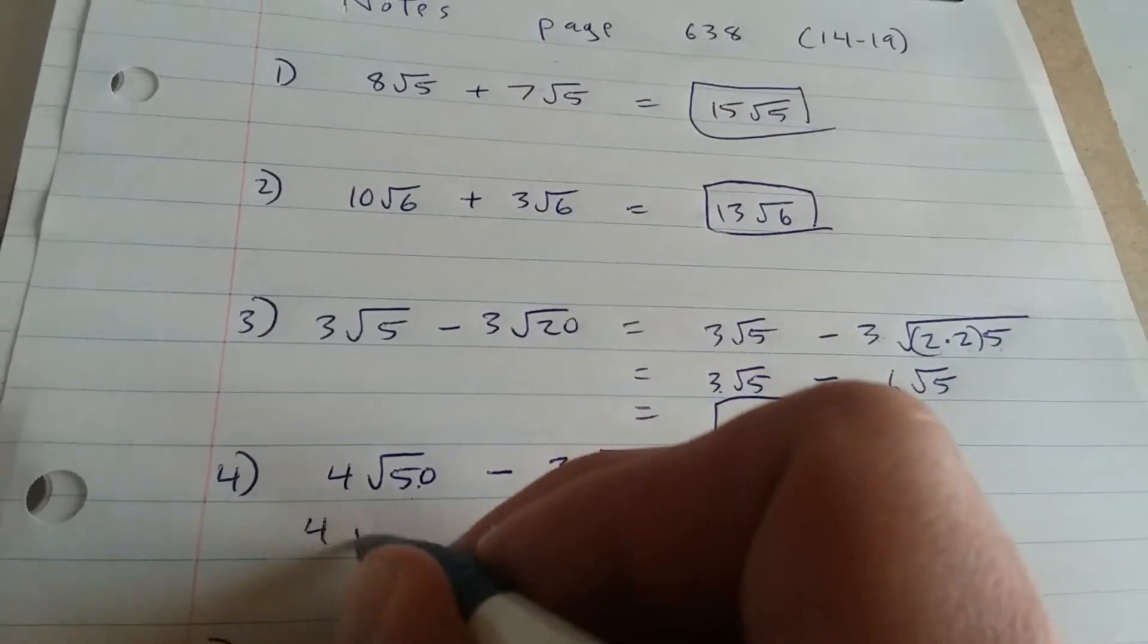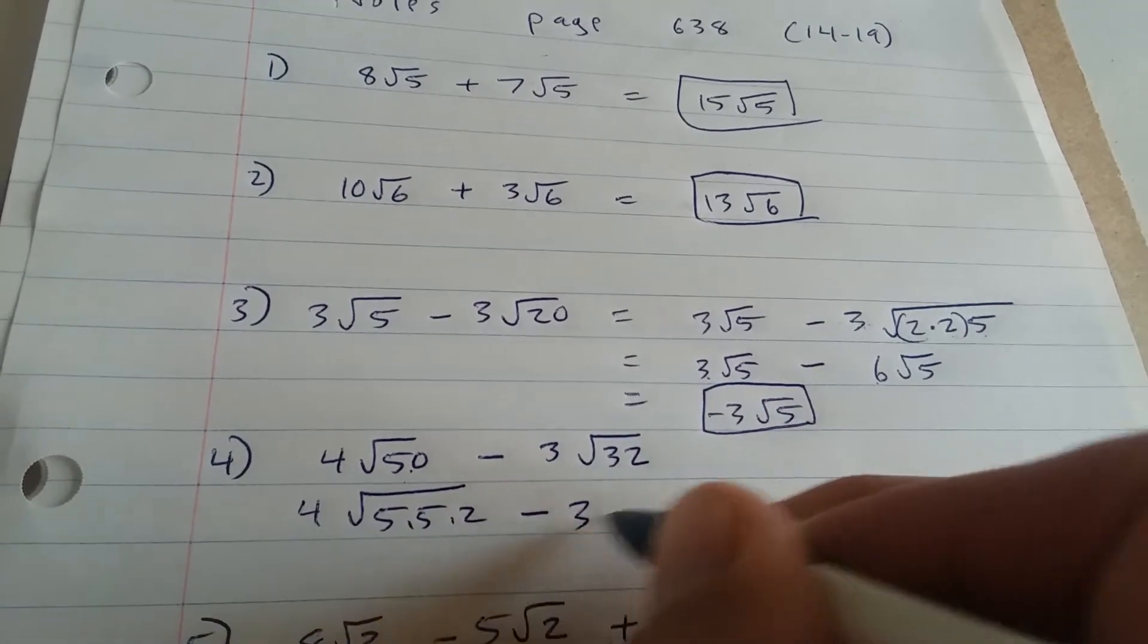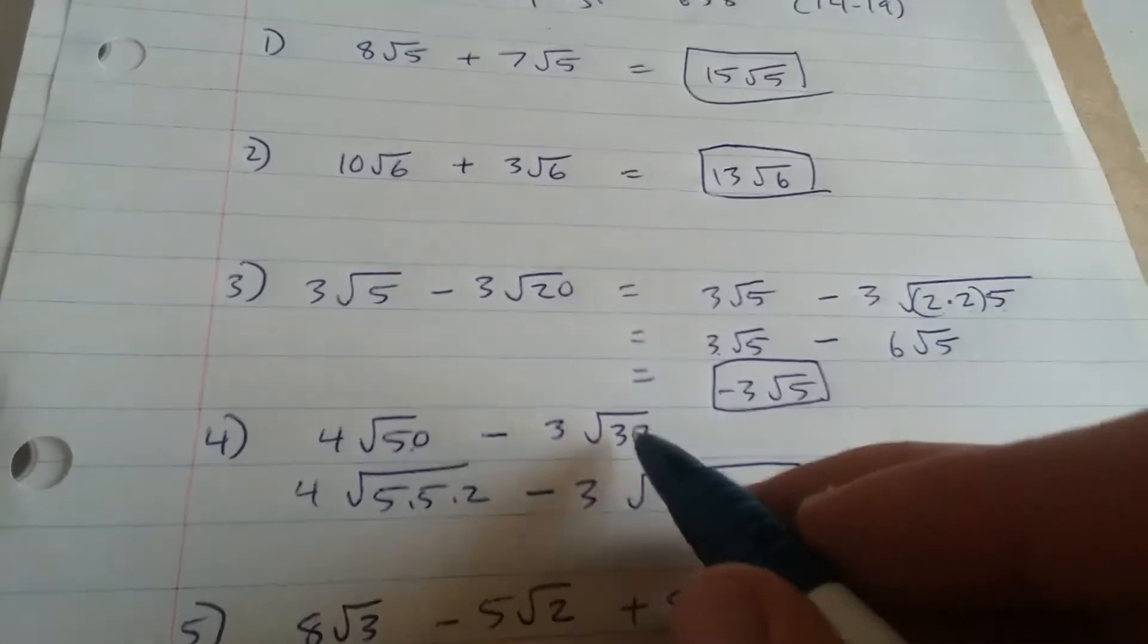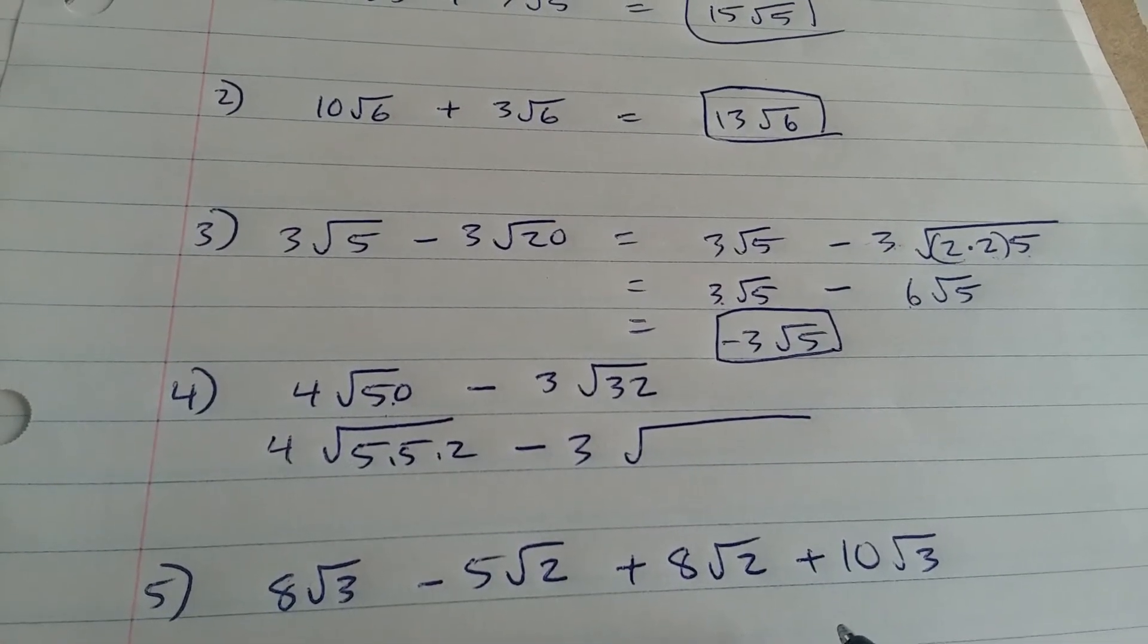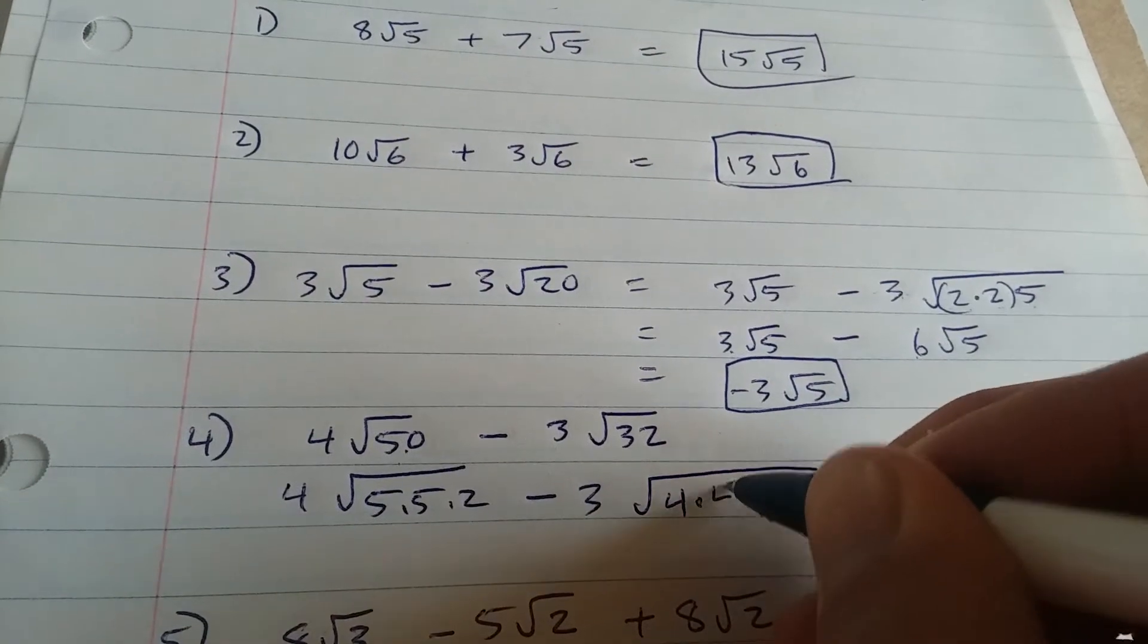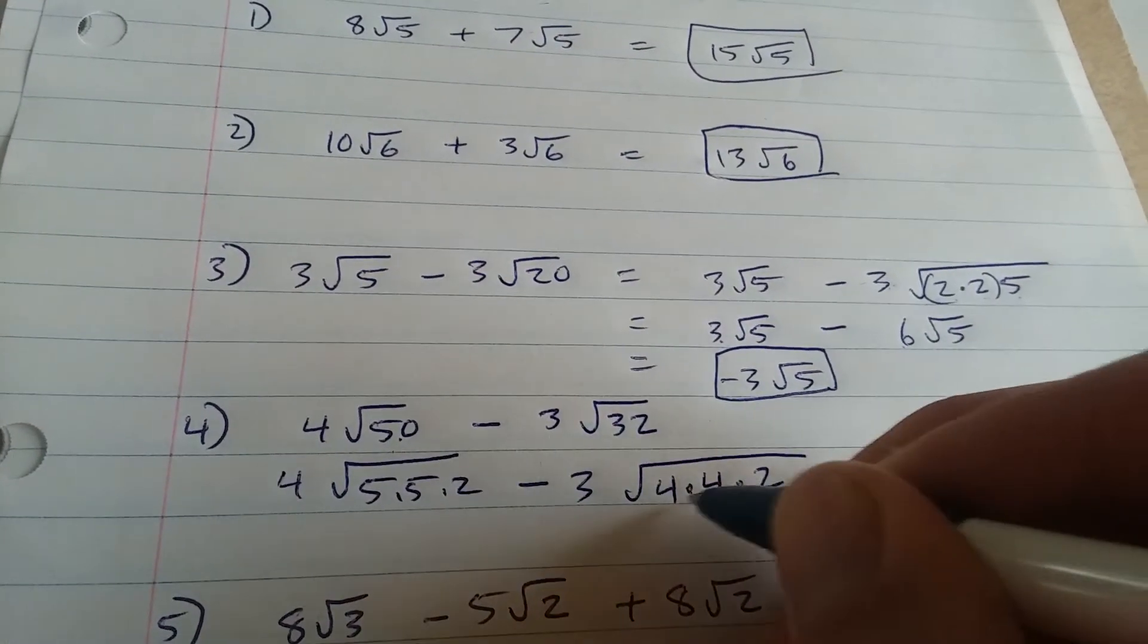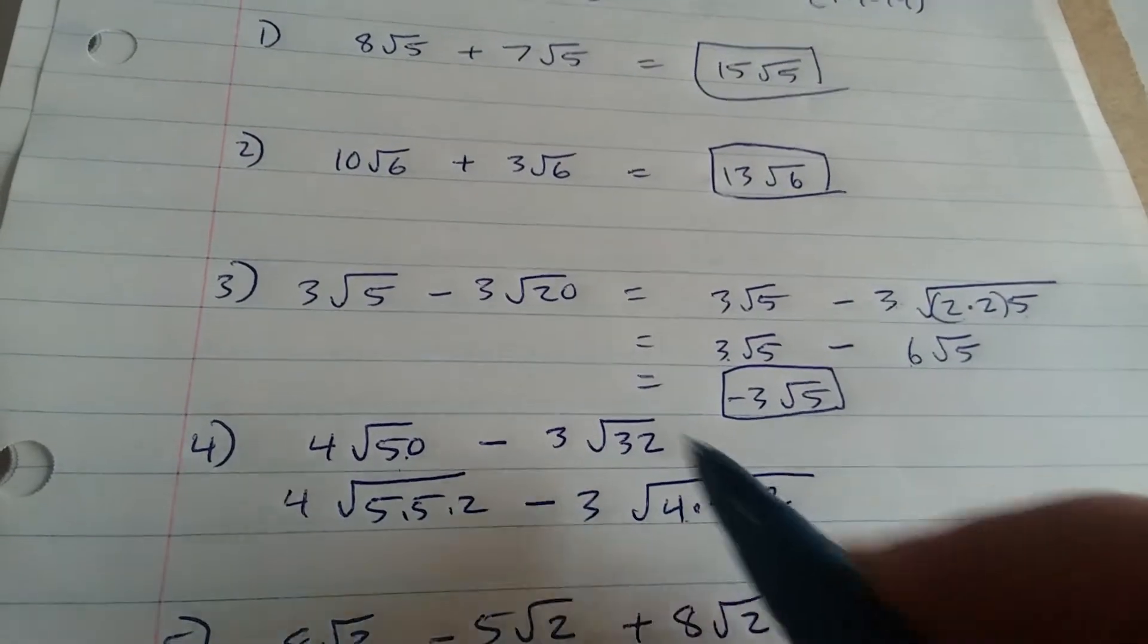So we have 4 root 5 times 5 times 2 minus 3 times the square root. 32 is the same thing as 4 times 4 times 2. I'm purposely writing it this way so I can pair up a pair of 4's. 4 times 4 is 16. 16 times 2 is 32.